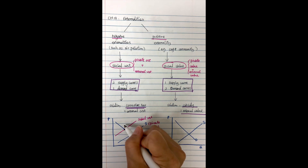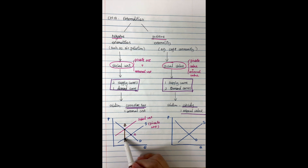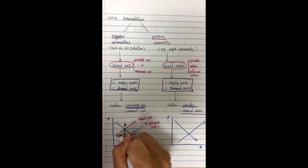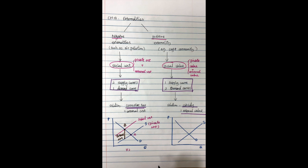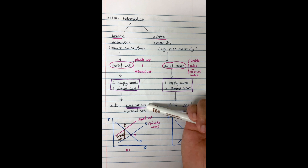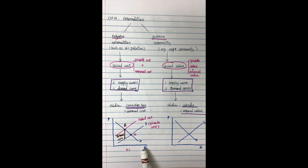This is point B, which we call the social optimum. The vertical distance between the two supply curves represents the external cost. In order to make people reduce air pollution, the government might impose a corrective tax equal to that external cost. So this graph represents negative externality — it has one demand curve but two supply curves.